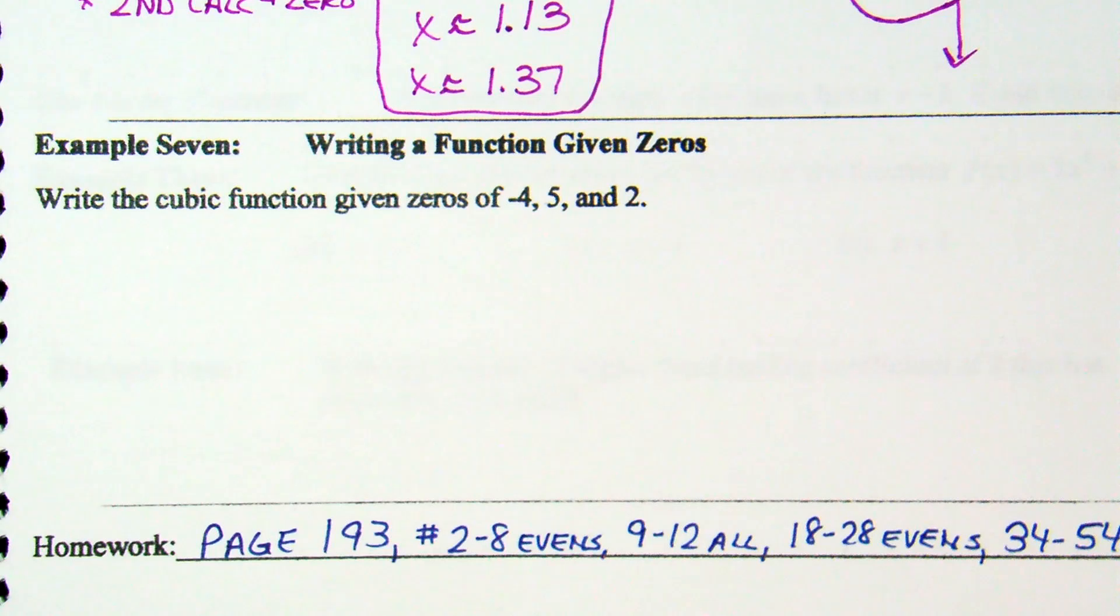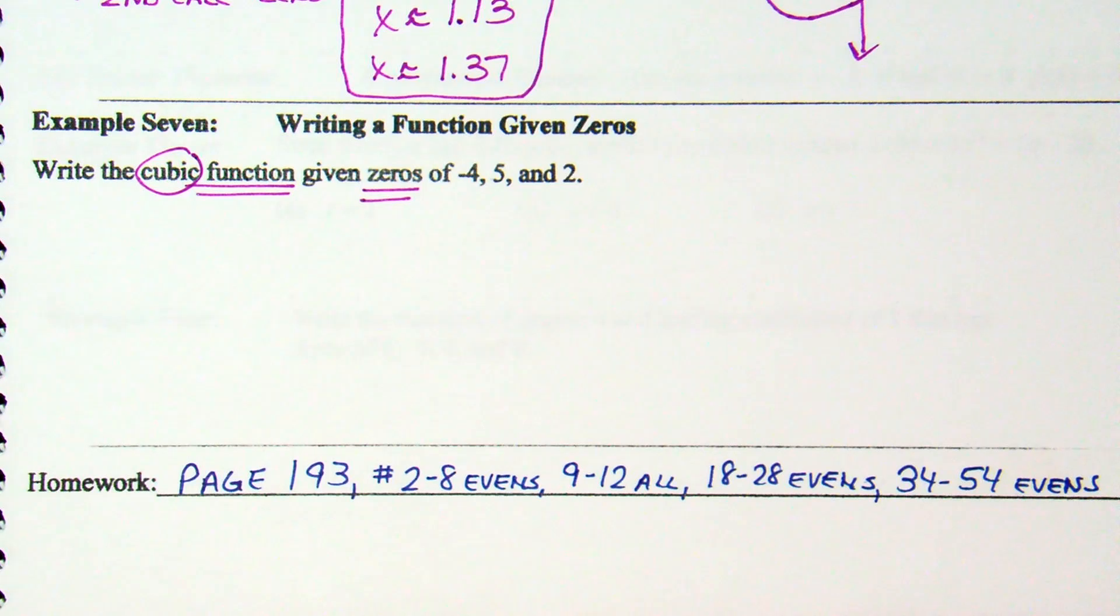Write a function given zeros. So, example 7 asks us to write the cubic function given zeros of negative 4, 5, and 2. Okay. So, cubic function given the zeros.